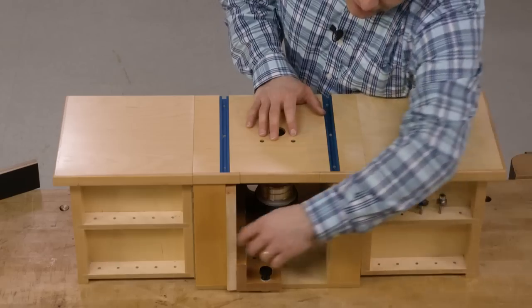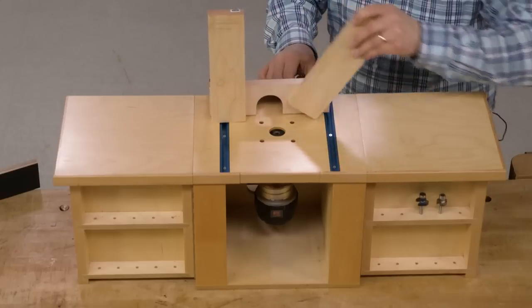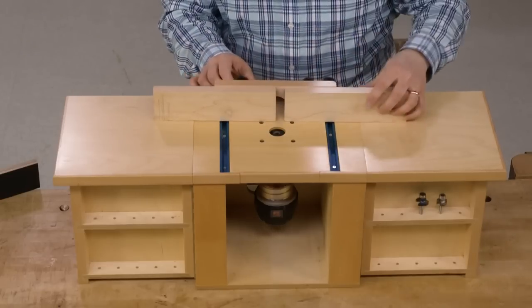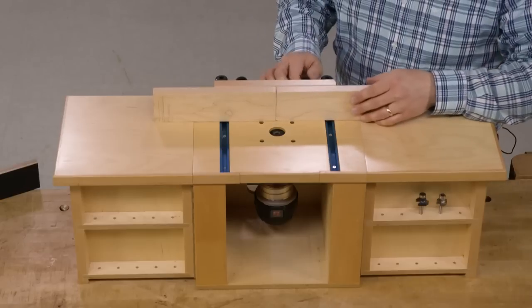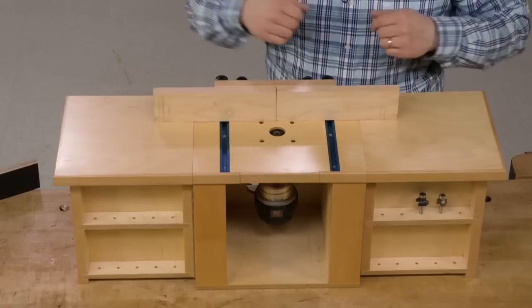Another cool feature is that the fence for the router table tucks inside. The faces of the fence fold down and fit on T-Track and allow you to attach it to the table using these T-Tracks installed in the top.